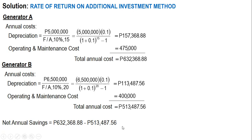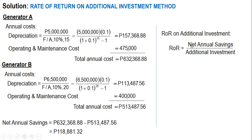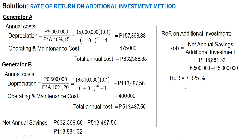The net annual savings equals 632,368.88 minus 513,487.56, which gives 118,881.32 pesos. The formula for rate of return on additional investment is: net annual savings divided by additional investment. The additional investment is 1.5 million pesos — since Generator A costs 5 million and Generator B costs 6.5 million, we need an additional 1.5 million pesos to choose B. The computed ROR is 7.925%.